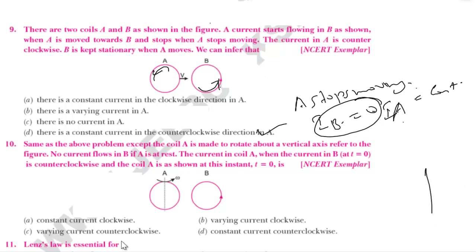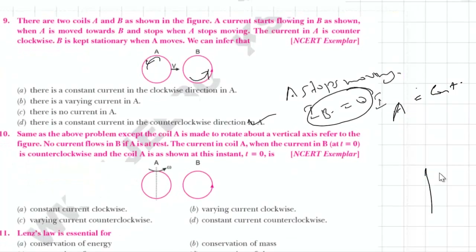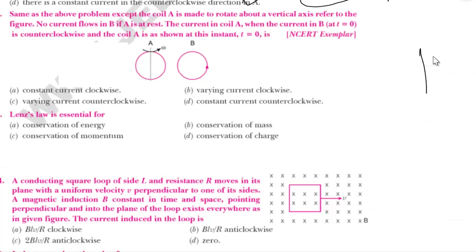Next question is the same as the above problem, except coil A is made to rotate about the vertical axis. The axis is vertical. No current flows in B if A is at rest.